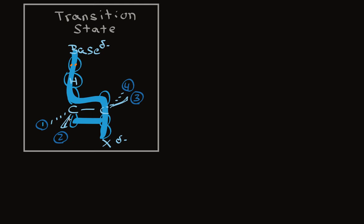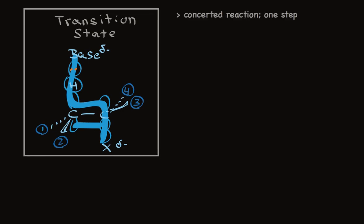As we look at this transition state, we can write out several characteristics that would be true of the E2 reaction mechanism. As the transition state implies, this is a concerted reaction. It all happens in one step. All bond-breaking and bond-making happen simultaneously. The reaction has second-order kinetics. The concentration of both reactants affects the reaction.